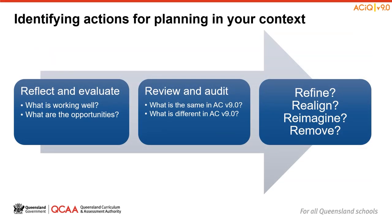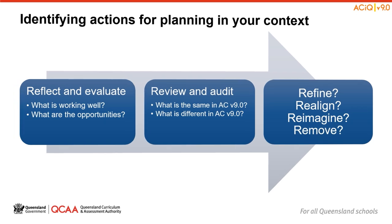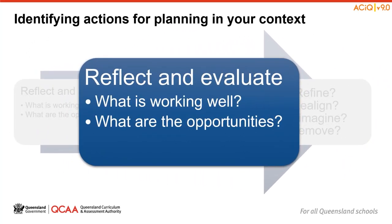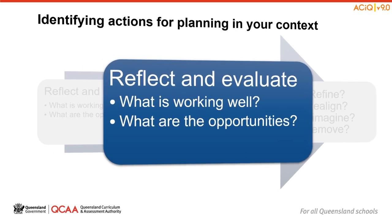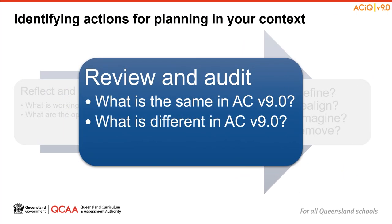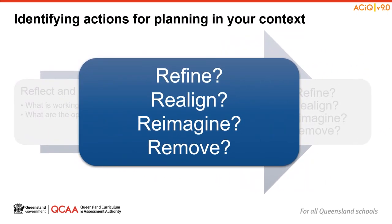In each session in the series, we have used the process outlined on screen to help organise our thinking around how to prepare for the Australian Curriculum Version 9. We began by reflecting on our current programs to evaluate what is working well and where we are looking for opportunities to refresh our teaching, learning and assessment. Then, as you worked through the Understand This Learning Area and Curriculum Elements sections in Sessions 1 and 2, you noted similarities and differences in Version 9 to identify where work may need to begin. In that review and audit phase, you may have started to make decisions about how much you may need to refine, realign, reimagine or remove aspects of your current programs.